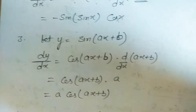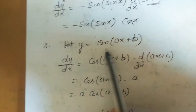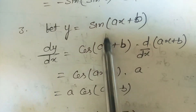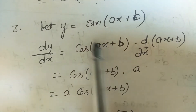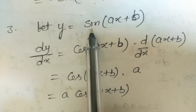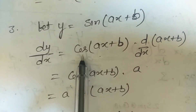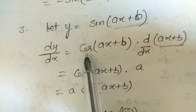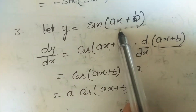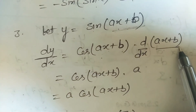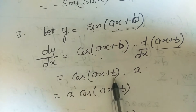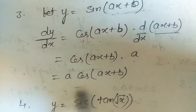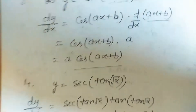Question 3: y = sin(ax+b). Applying chain rule: derivative of sin is cos, so cos(ax+b) · d/dx(ax+b) = a·cos(ax+b).